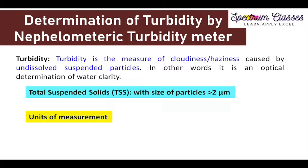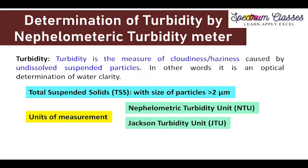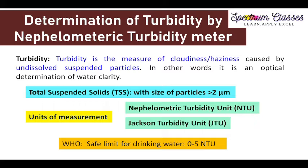Now, units of measurement. Turbidity is measured in two different units: one is nephelometric turbidity unit, represented by NTU, and the other is Jackson turbidity unit, represented by JTU. For drinking water, the safe limits prescribed by the World Health Organization are 0 to 5 NTU. If the water has turbidity less than 1 NTU, then it is ideal. Between 1 to 5 NTU is acceptable, but more than 5 NTU is not permissible.